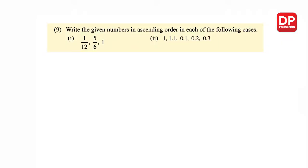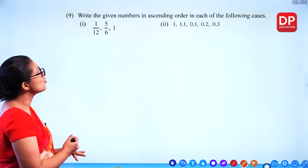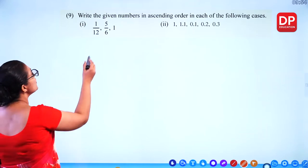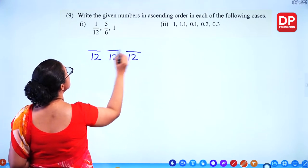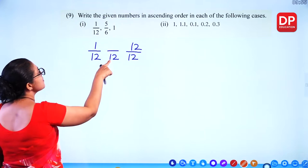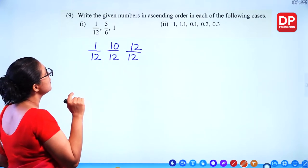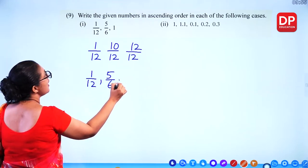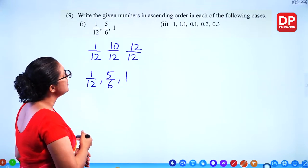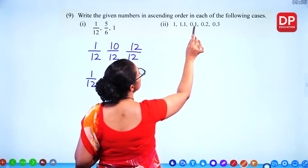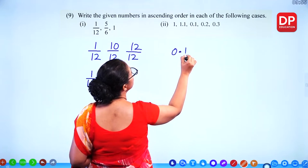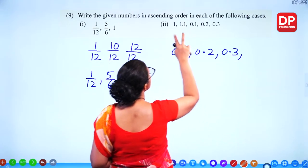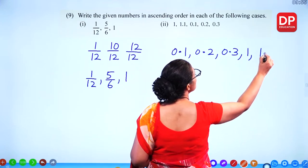Write the given numbers in ascending order. For fractions with different denominators, convert to the same denominator — 12. Then 1 means 12/12, and 5/6 becomes 10/12. The smallest is 1/12, then 5/6, then 1. For decimals, look at the first decimal place: smallest is 0.1, then 0.2, 0.3, then whole numbers: 1 is next, and 1.1 is the largest.